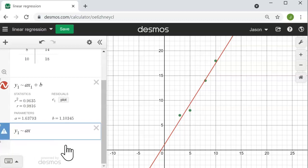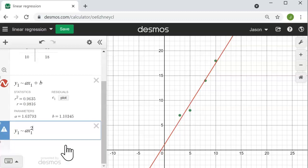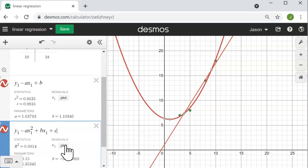a x1 squared—I can use the caret key to create that exponent—plus b x1 plus c will create a quadratic function that best fits the data.